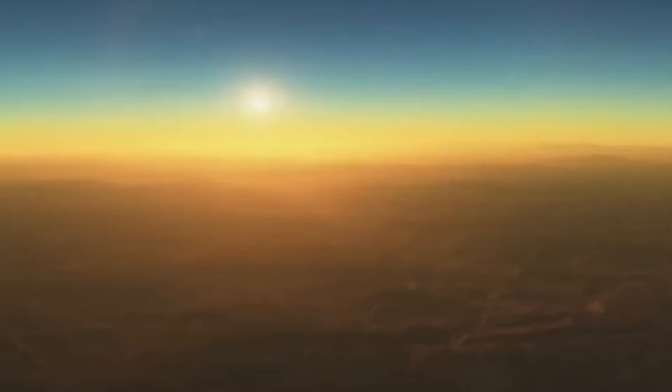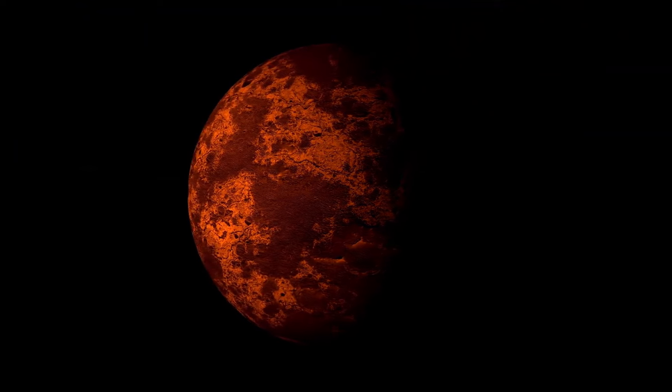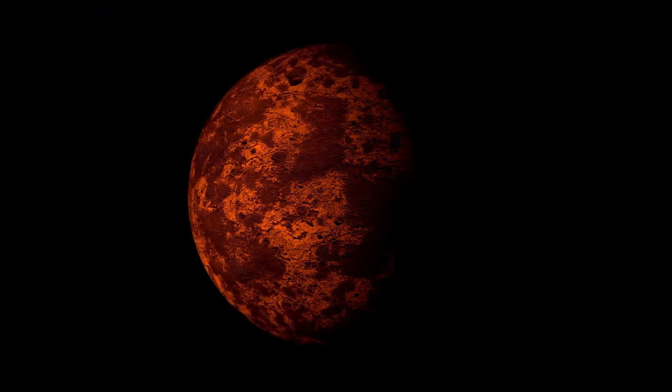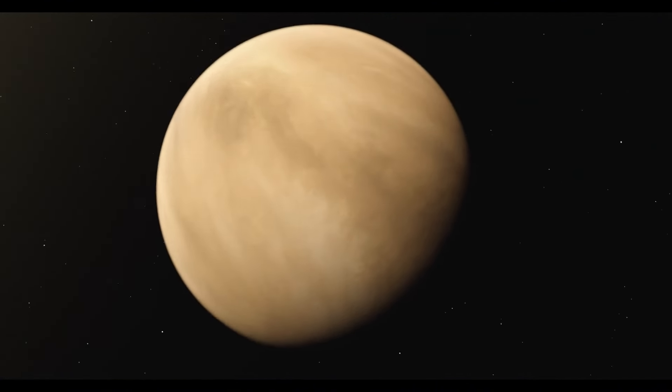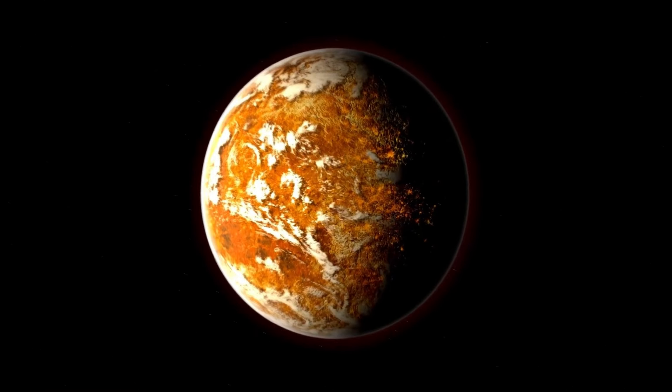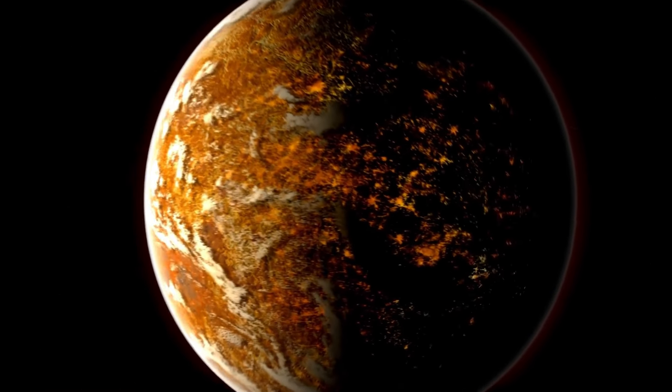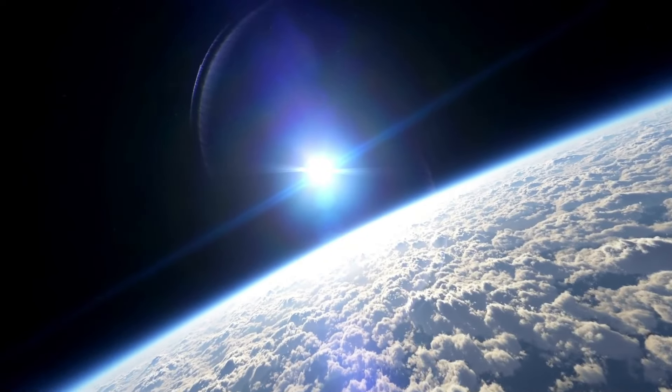In the case of Proxima B, the planet in question orbits the star Proxima Centauri, a red dwarf located just 4.24 light-years from Earth. Discovered in 2016, Proxima B quickly captured the imagination of scientists and the public alike due to its proximity to Earth and its location in the habitable zone of its parent star. The habitable zone, often referred to as the Goldilocks zone, is the region around a star where conditions are just right for liquid water to exist, an essential ingredient for life as we know it.